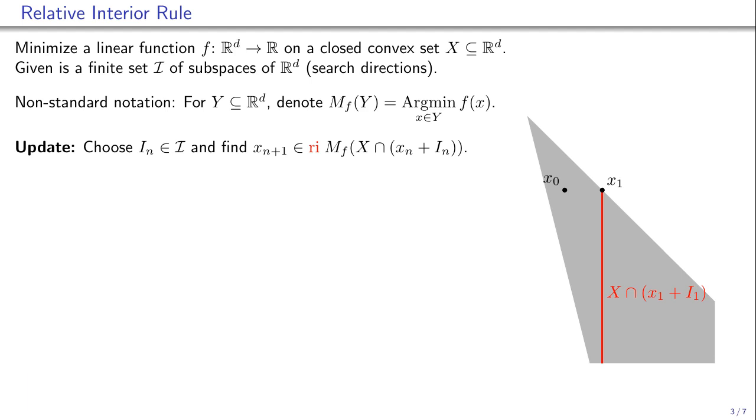If we chose x_1, the next iteration couldn't do anything. But the relative interior rule forces us to choose an interior point of the line segment. This allows the next iteration to improve the objective.